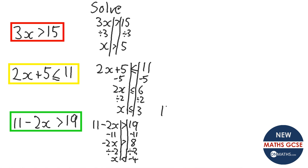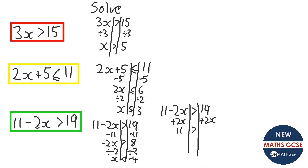I'm going to show you a trick to avoid dividing by a negative. For the same question, instead add 2x to both sides, making it positive. So it becomes 11 > 19 + 2x. Then subtract 19 from both sides: 11 − 19 = −8, giving −8 > 2x. Divide both sides by 2: −4 > x. That's the same as x < −4. Adding the negative x to the other side avoids the sign-flip rule entirely.